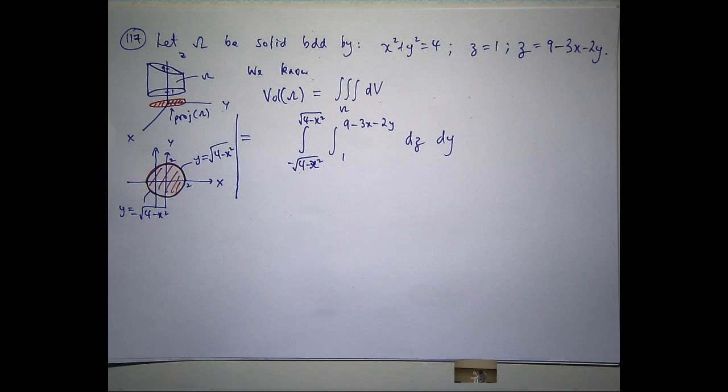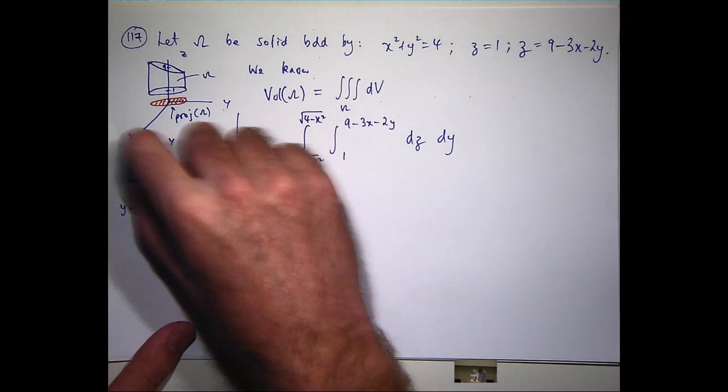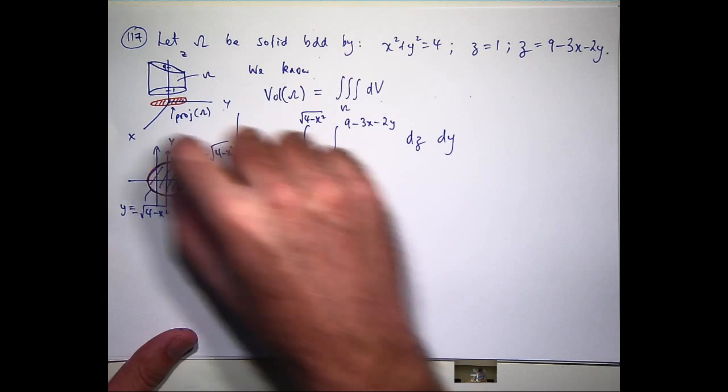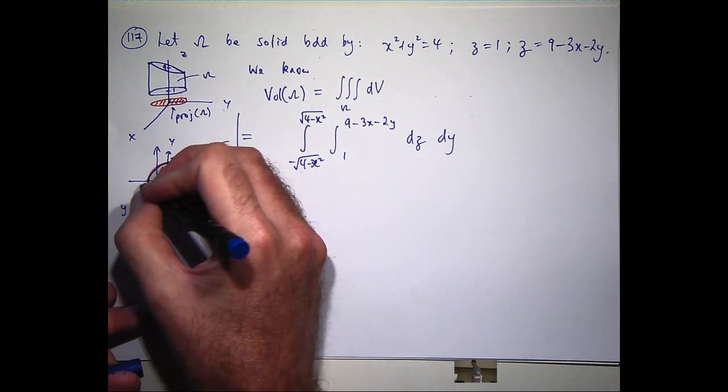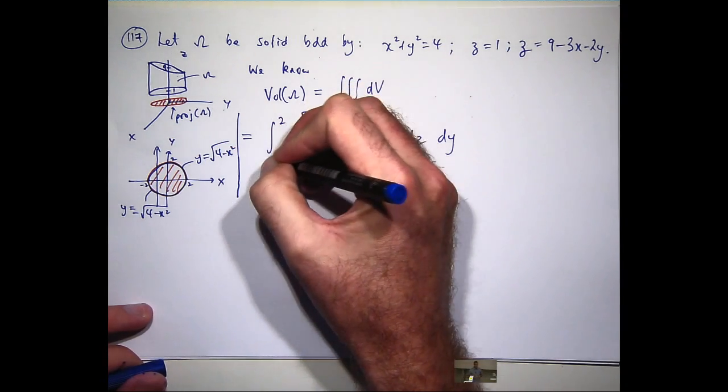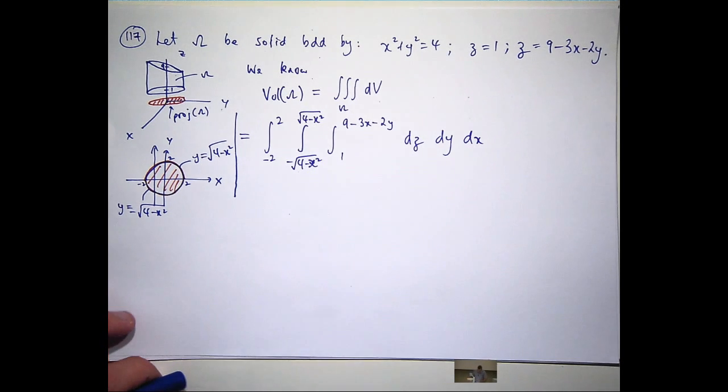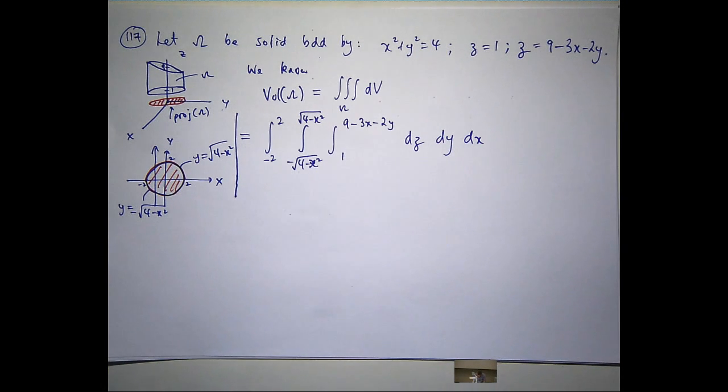So if I wanted to put two functions that bound y, well, the top one would be root 4 minus x squared, and the bottom one would be minus root 4 minus x squared. dy. What about x? Who can give me the x bounds? Well, let's just slide this around. If I slide this around, what am I going to be between? I'm going to be between minus 2 and 2.